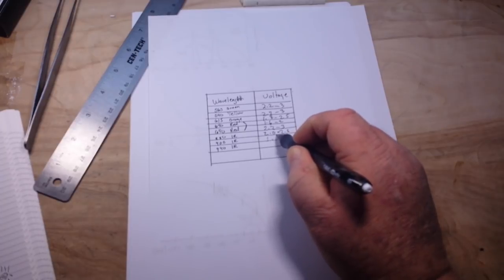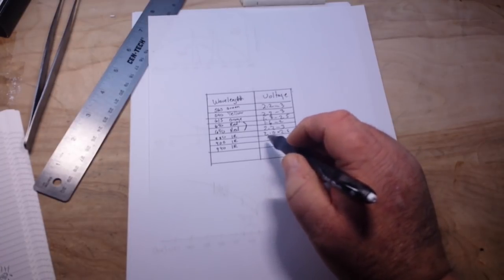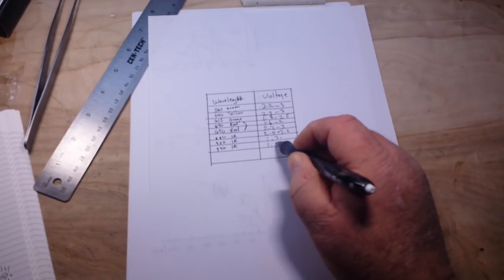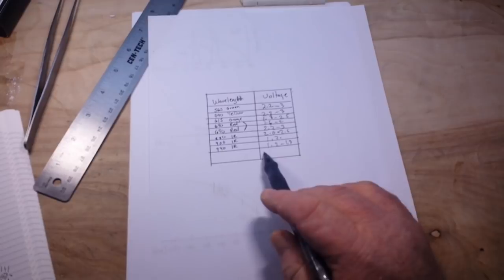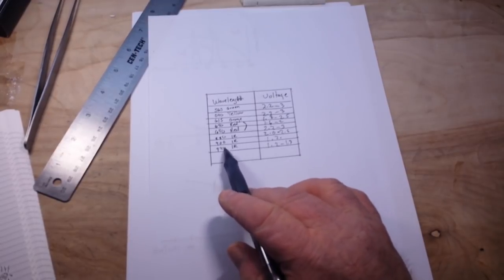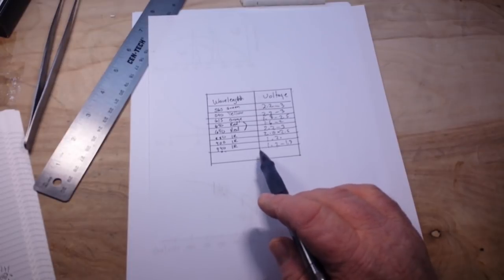But once you get up to 940, now we're down to 1.2 volts. So that's pretty low. And then the 940 is about the same. We'll call it 1.2 to 1.3. So you see, you can get some, if you're messing around with IR, if you go up to the higher range, you can get some nice low conduction out of them.